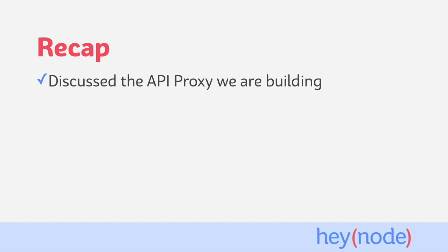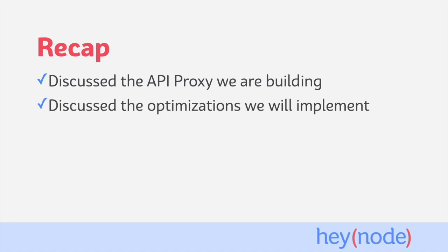To recap, in this short tutorial, we discussed the API proxy we are building. We'll build an API proxy with Express to create a new interface to the NASA Exoplanet API. We also discussed the optimizations we are going to implement: caching to speed up retrieval of data and reduce load, and compression to return smaller payloads of data over the network, reducing latency and bandwidth usage.